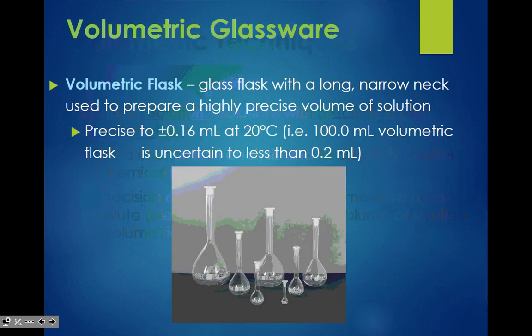So let's take a look at some glassware. The volumetric flask is your best choice for creating a stock solution because it's the most precise. It's a glass flask — looks like this — with a long narrow neck used to prepare a highly precise volume of solution. It's precise to about plus or minus 0.16 milliliters.